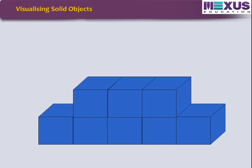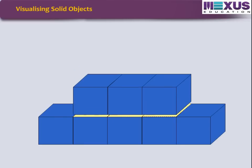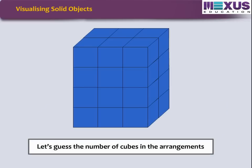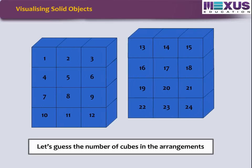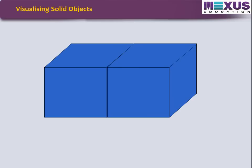Sometimes when we see combined shapes, some of them may be hidden from your view, but we can visualize the hidden parts. Let's guess the number of cubes in the arrangements. In the first object, both layers contain 12 cubes each. Hence, in all, it contains 24 cubes. We can also make a cuboid by joining cubes and can also estimate its length, breadth, and height. Let's check one example.